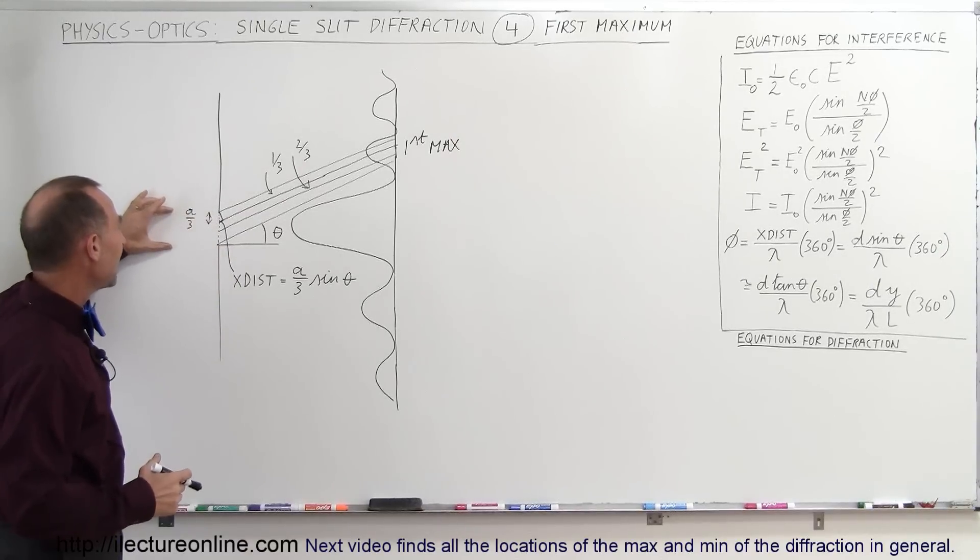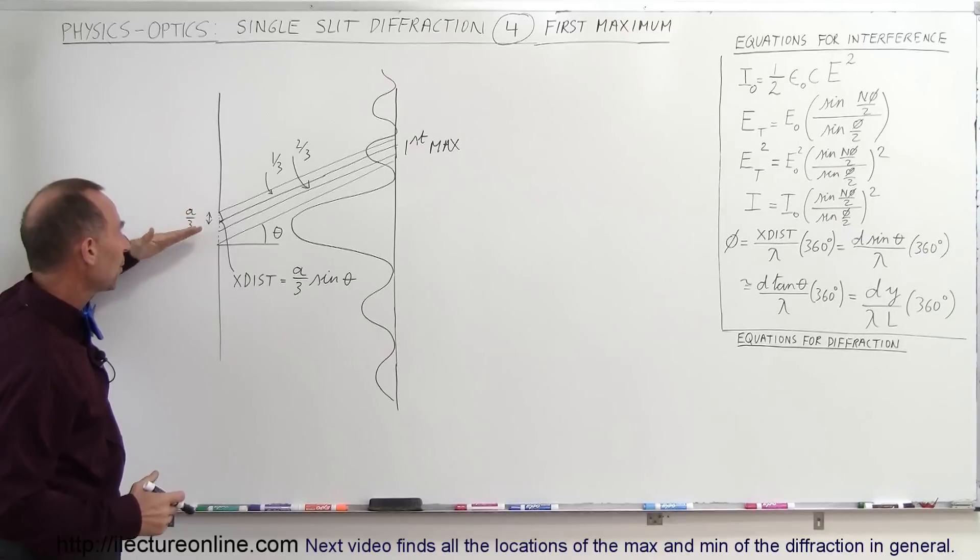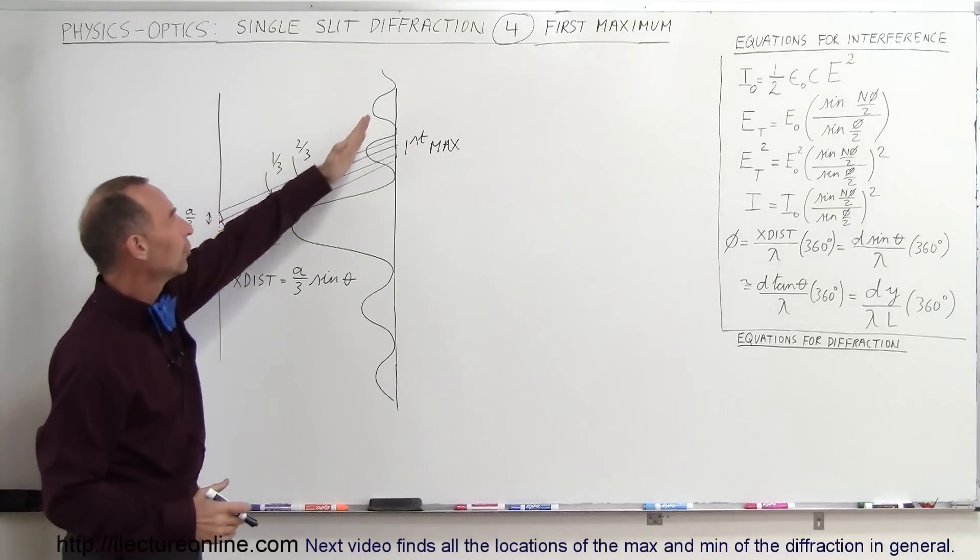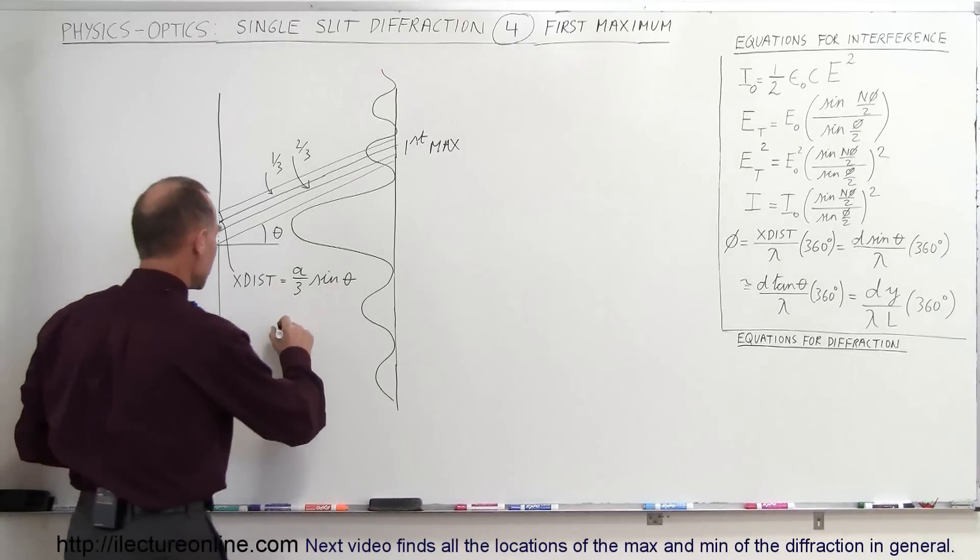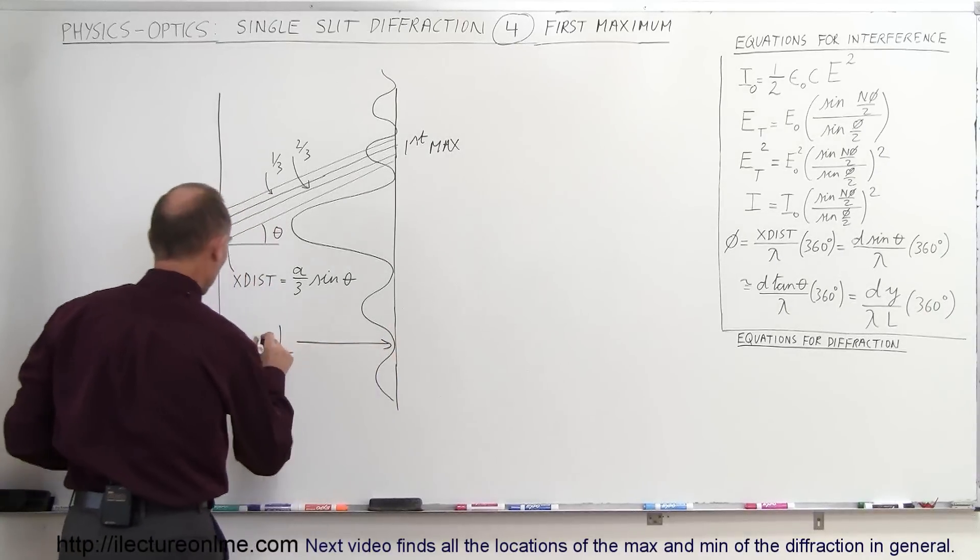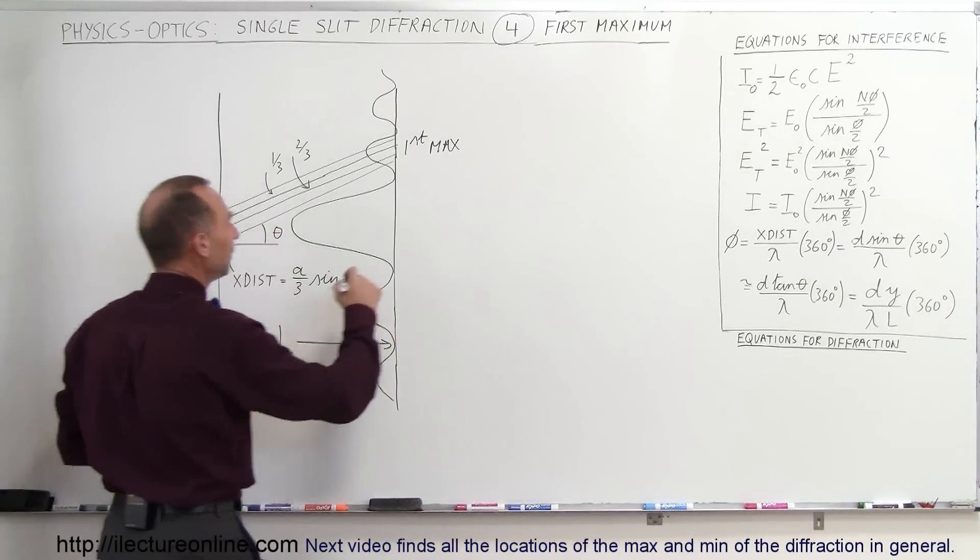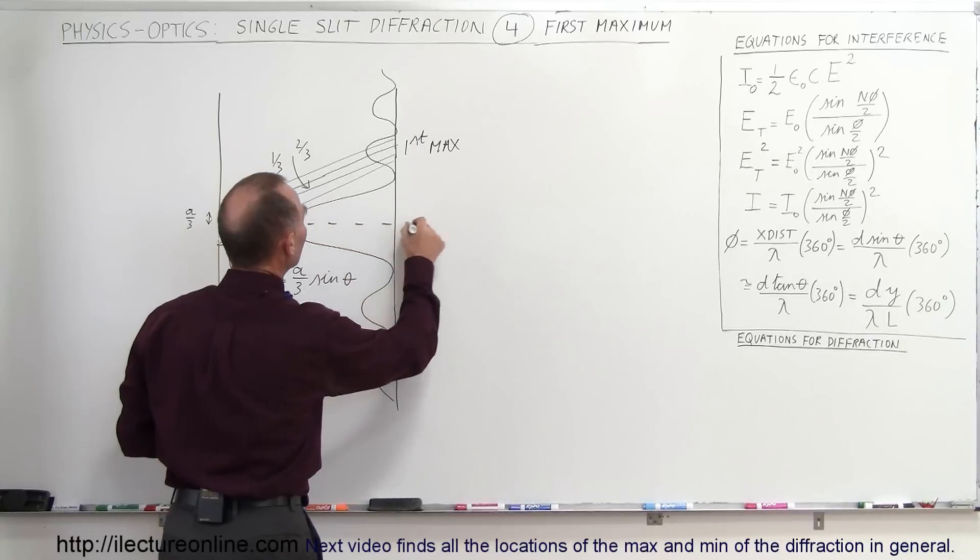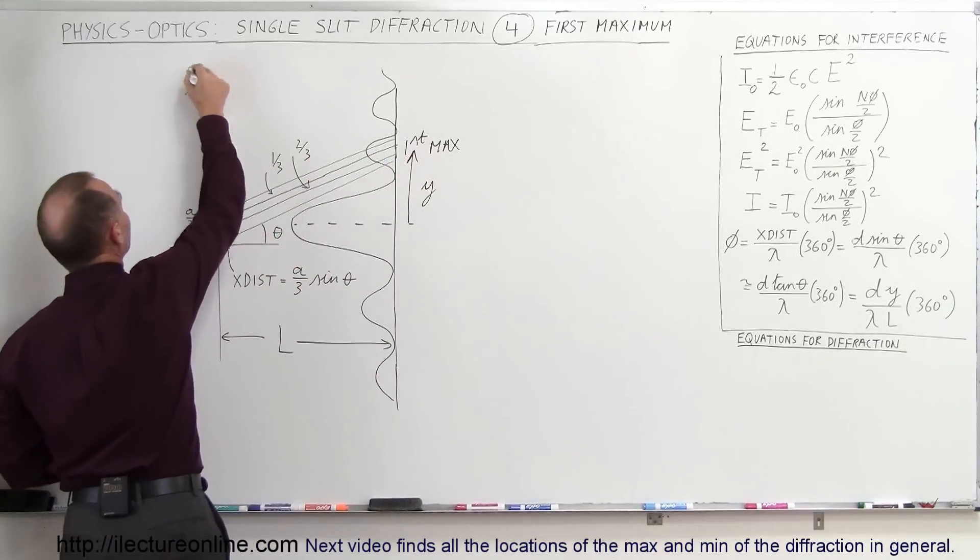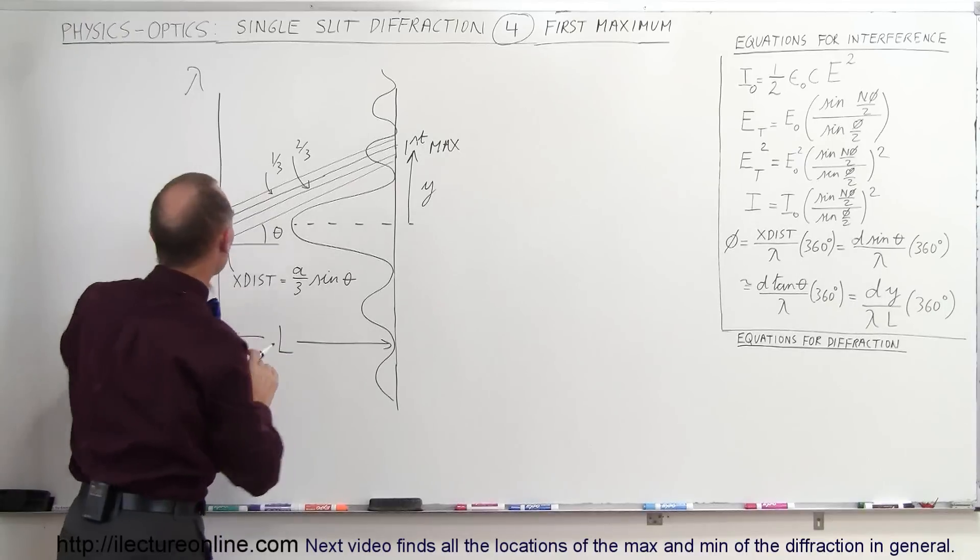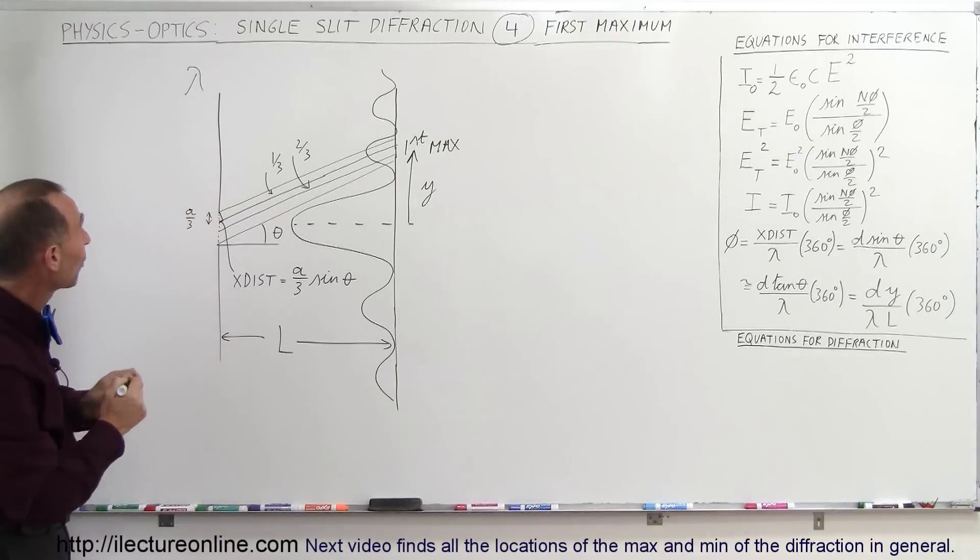is to have a slit of width A in such a way that when we look up at a particular angle to the screen, the screen is back here at a distance L away from the opening right here. And let's say we're looking for the distance to the first maximum, let's call that Y, and of course we have light coming into the hole here to the opening that has wavelength lambda.